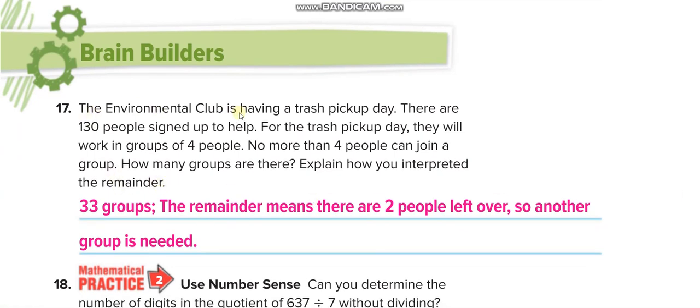The environmental club is having trash pickup day. There are 130 people signed up to help. They will work in groups of 4 people, so no more than 4 people can join a group—you can put 4 people or less than that in a group, not more than 4. If you divide 130 by 4, you get 32 remainder 2.